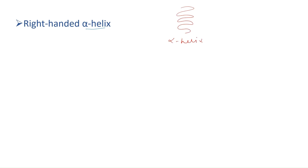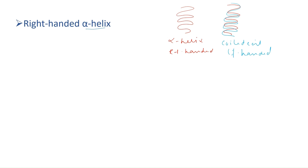As the name suggests, alpha keratin is made up of alpha helices, which have a right-handed conformation. In alpha keratin, two such alpha helices are arranged in a coiled-coil structure. During this arrangement, both alpha helices coil in a left-handed conformation. They are arranged in parallel — the N-terminal of one alpha helix faces the N-terminal of the second alpha helix. This coiled-coil arrangement constitutes the tertiary structure.